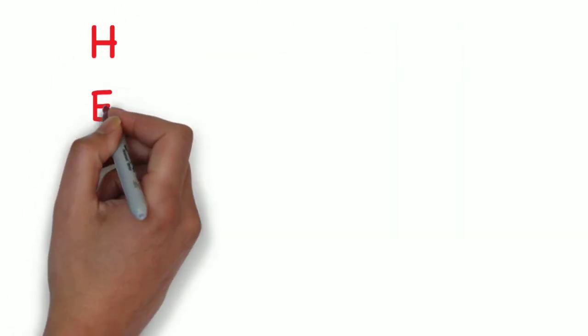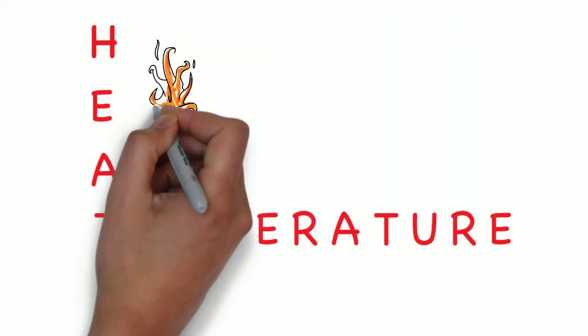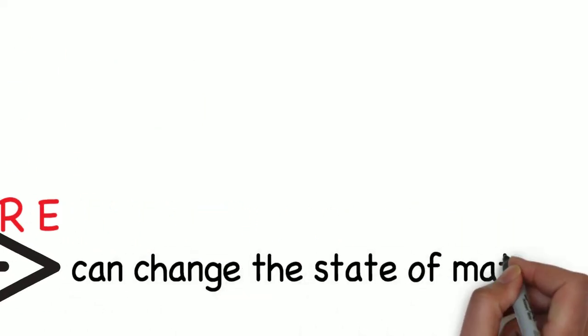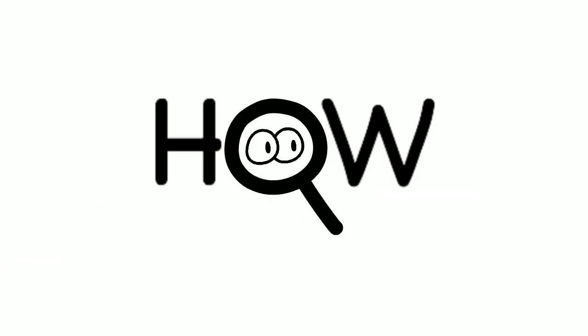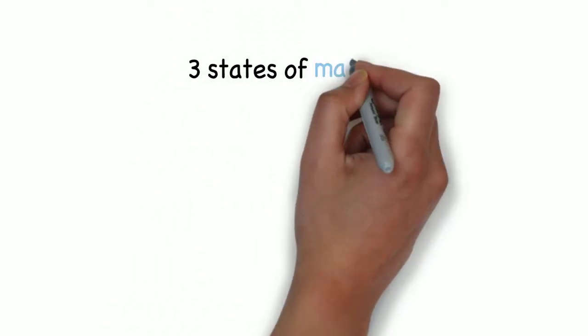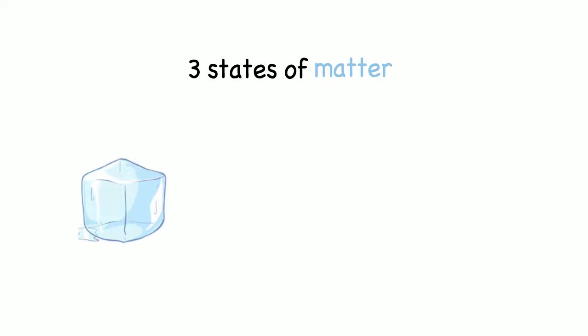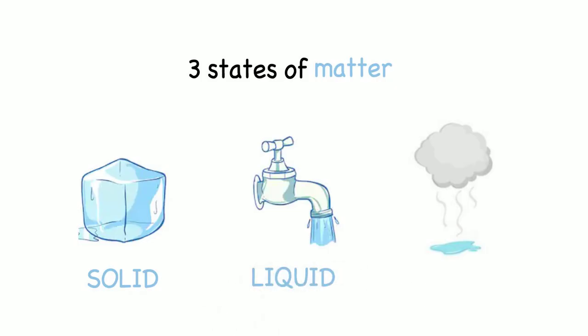Now that we know the two terms, let's see what they can do. Heat and temperature can change the state of matter. Let's see how. But first, let me remind you that matter can take three states: solid, liquid, and gas.